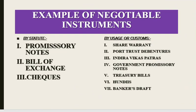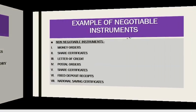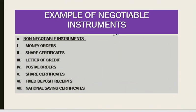Examples of negotiable instruments: by law — promissory note, bill of exchange, and cheque. By usage or customs — share warrants, deposit receipts, debentures, Indira Vikas Patra, government promissory notes, trading bills, hundis, and banker's drafts. Non-negotiable instruments include money orders, share certificates, letters of credit, postal orders, fixed deposits, and national savings certificates.